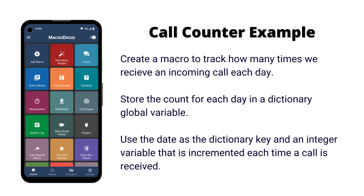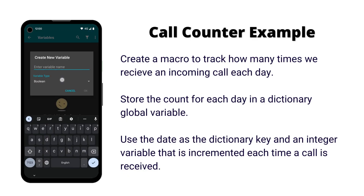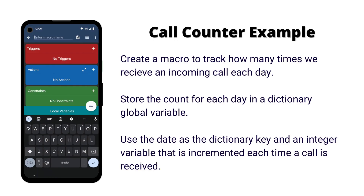In this example we will create a macro to track how many calls we get each day and store each day's value within a dictionary. First, we create a global dictionary variable to store the values. Next, we create a new macro with a call incoming trigger. We will trigger on any call regardless of who it's from.